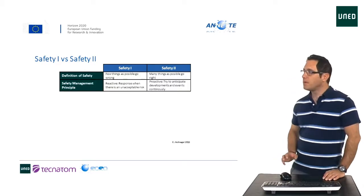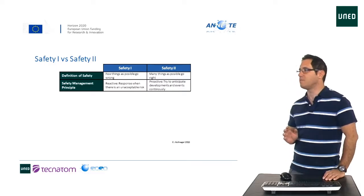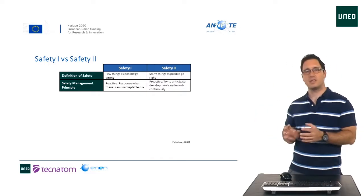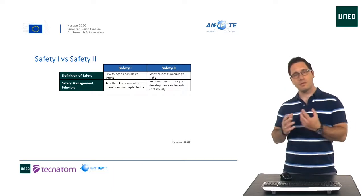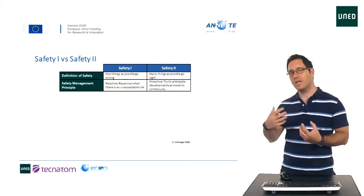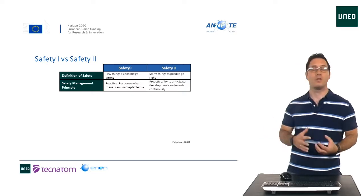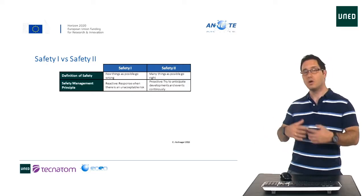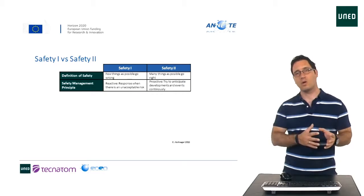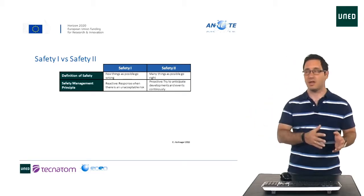From the perspective of safety management principles, Safety I is reactive. We are going to improve safety only when something wrong or negative happens. Until we don't have negative outcomes, we are not going to do something. We are basing our future success on past things.